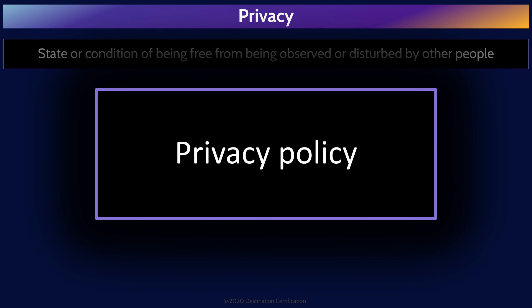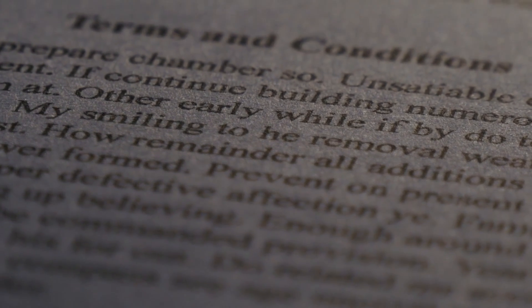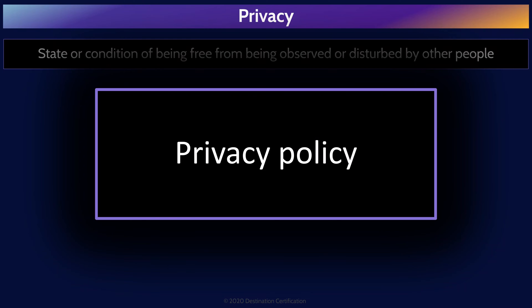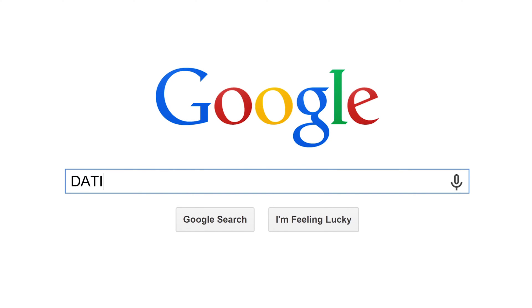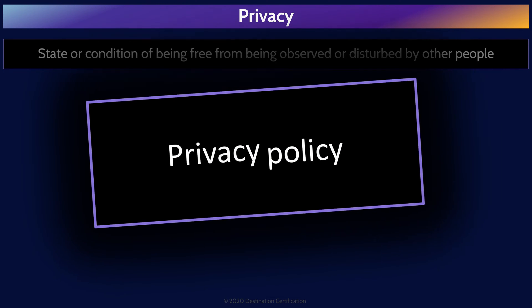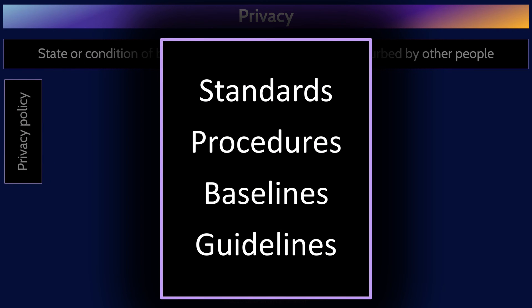Implementing strong privacy controls within an organization begins with a good privacy policy. The most important part of a privacy policy is well-defined roles with clear accountabilities and responsibilities. Many regulations around the world require that a company have a data controller — essentially an owner for the privacy program — that is accountable for the privacy controls within an organization. For an overview of the roles, see the first Domain 2 video. The privacy policy should also clearly articulate what types of personal data the organization collects, how the data is used, stored, opt-out procedures, and the relevant security policies to protect the data. Further, there should be well-defined standards, procedures, baselines, and guidelines that are based on the privacy policy.